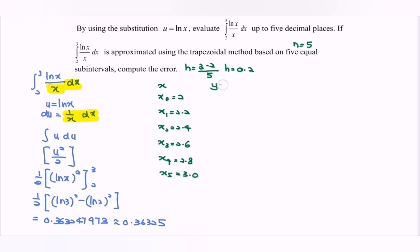Regarding y, we have ln x over x. So y₀, using the calculator, we have 0.346574. Then y₁, we have 0.35...